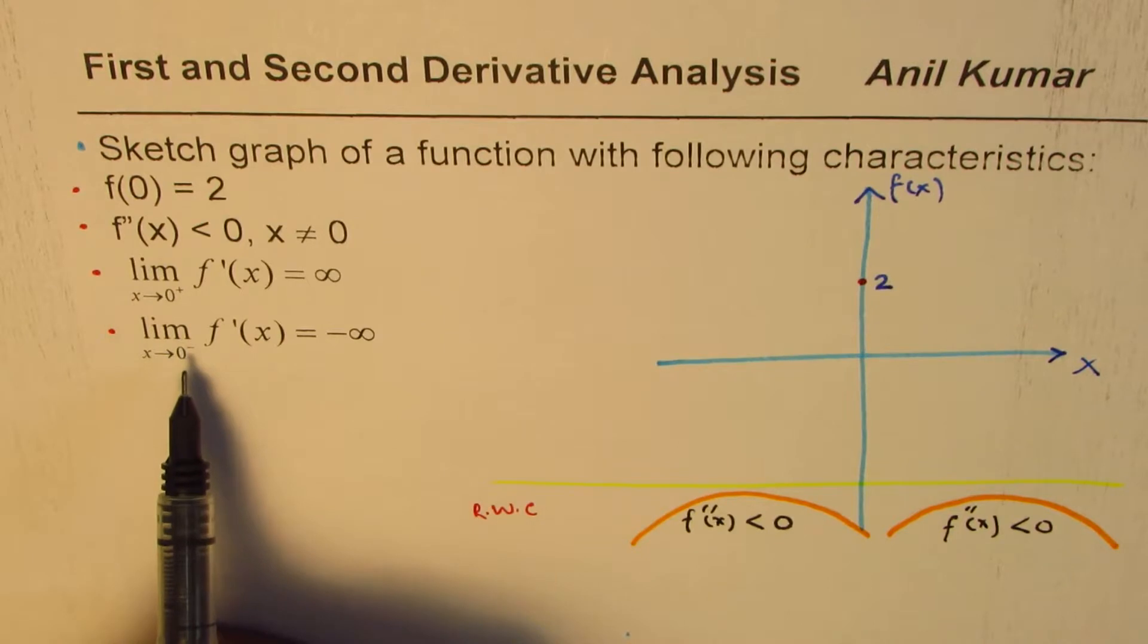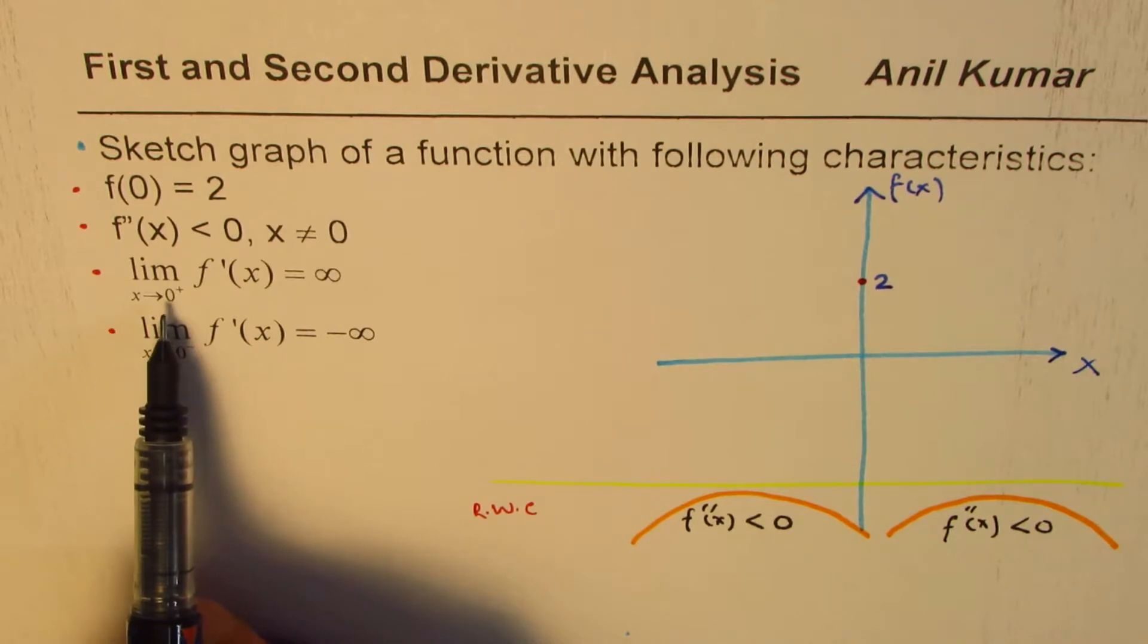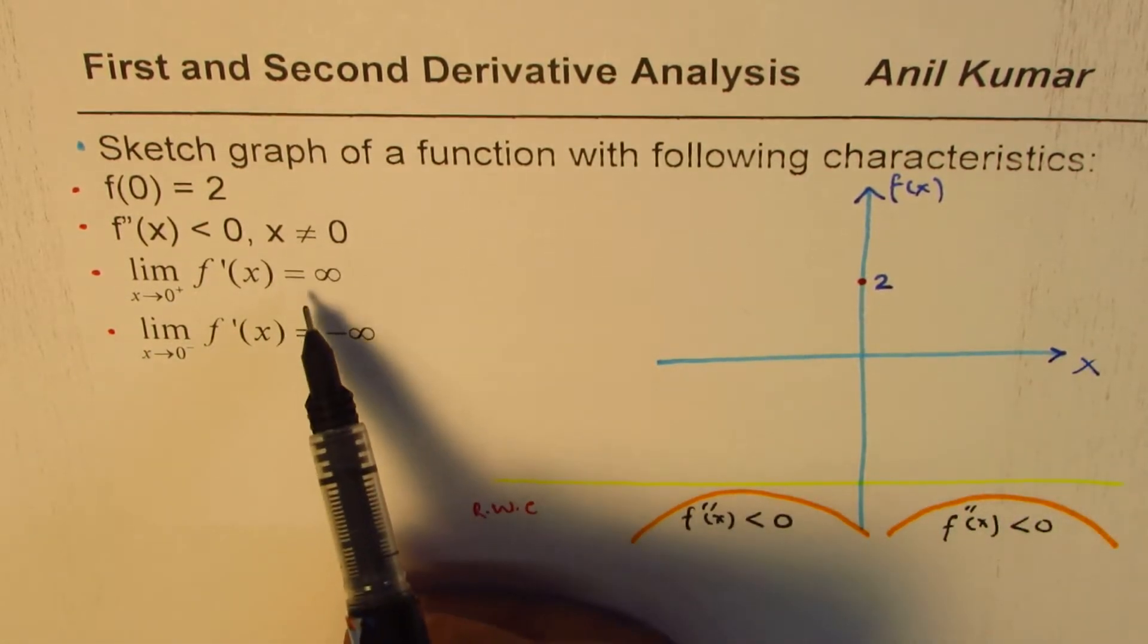Then we are given some additional information which says that the derivative of the function, when you approach 0 from the right side, from the positive side, is positive infinity.